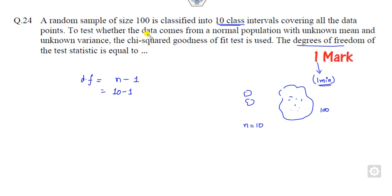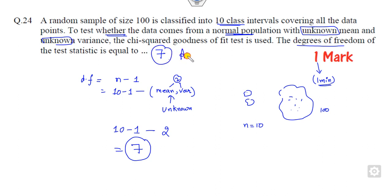Now, you have to test whether they come from a normal distribution with unknown mean and unknown variance. It means you have to subtract something which is unknown. How many parameters are unknown? One is the mean and other is the variance. So there are two unknown parameters. You have to subtract the normal degree of freedom minus the unknown parameters. So the right answer is 7.